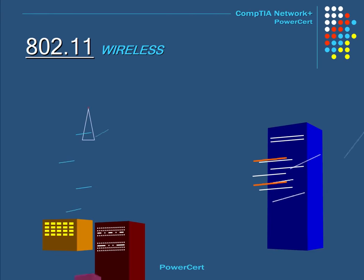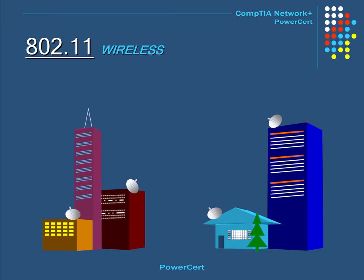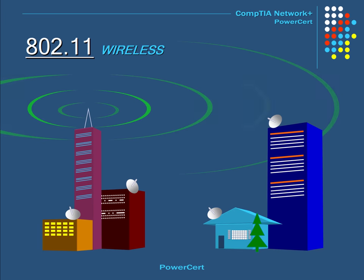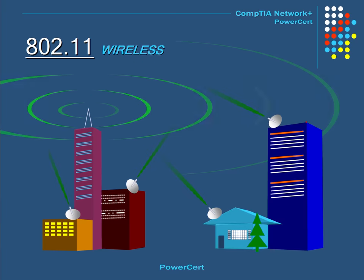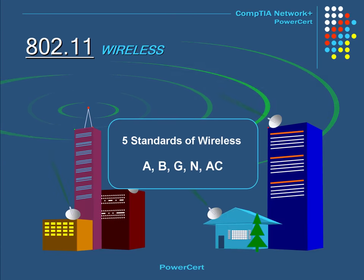The IEEE is an international organization for the advancement of technology related to electricity. They are responsible for a set of standards for the 802 project. One of these standards is the 802.11 standard, which covers wireless. Wireless technology is becoming more and more popular, and today there are five wireless standards: A, B, G, N, and AC.